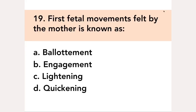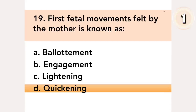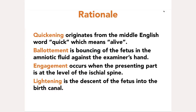First fetal movements felt by the mother is known as: A. Ballotment, B. Engagement, C. Lightening, D. Quickening. Answer: D. Quickening. Quickening originates from the Middle English word 'quick' which means alive. Ballotment is bouncing of the fetus in the amniotic fluid against the examiner's hand. Engagement occurs when the presenting part is at the level of the ischial spine. Lightening is the descent of the fetus into the birth canal.